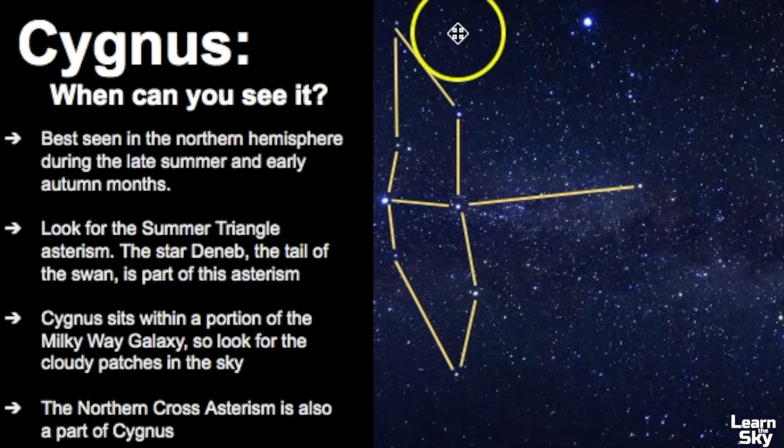You can only see two of the constellations that are part of the Summer Triangle. If you want to learn more about asterisms, go see that video. Cygnus sits within a portion of the Milky Way galaxy, so you want to look for cloudy patches in the sky, but this is really only if you are in a dark sky area.